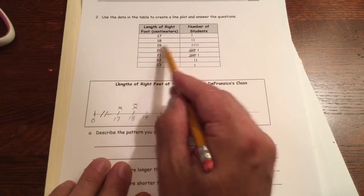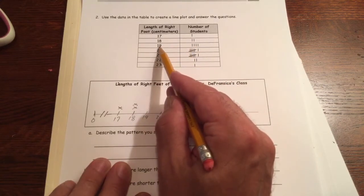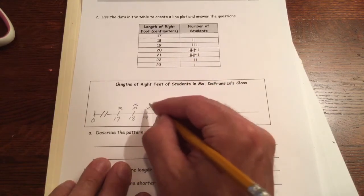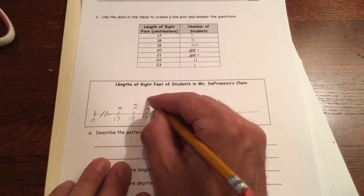19 centimeters. Four students had feet, had a right foot of 19 centimeters. That's one, two, three, four.